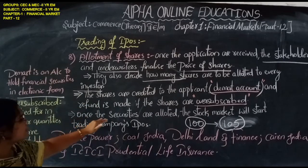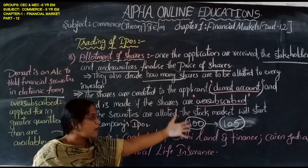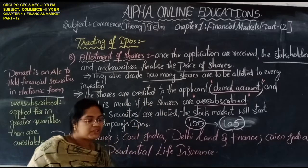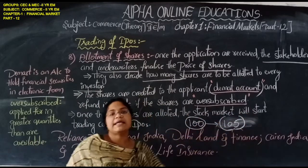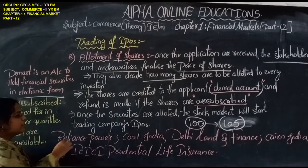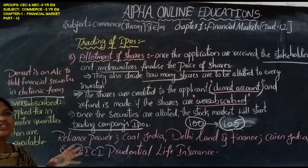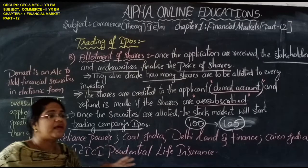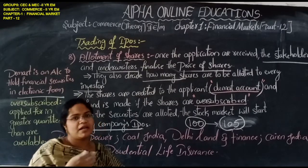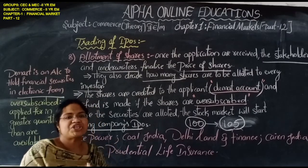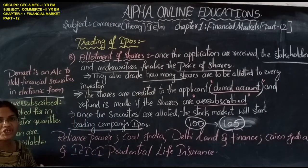Once the securities are allotted to the investors, the stock market trading will start. The shares are allotted and market trading of those shares begins.